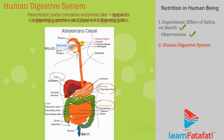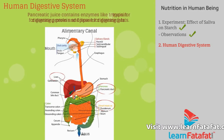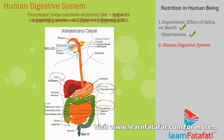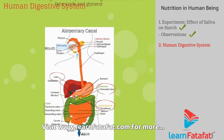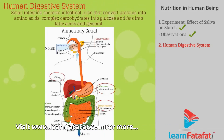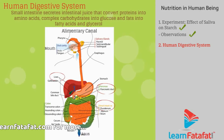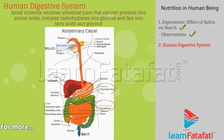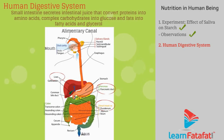Pancreatic juice contains enzymes like trypsin for digesting proteins and lipase for digesting fats. The small intestine secretes intestinal juice that converts proteins into amino acids, complex carbohydrates into glucose, and fats into fatty acids and glycerol.